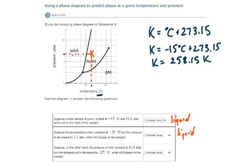Suppose on the other hand, the pressure is held constant at 11 atm here, but the temperature is decreased by 127 degrees Celsius. So a decrease of 127 degrees Celsius is also a decrease of 127 Kelvin. So the new temperature in Kelvin would be 131.15.